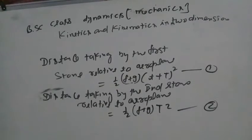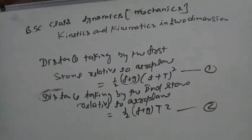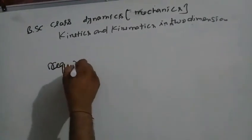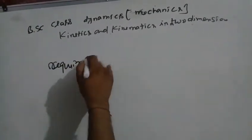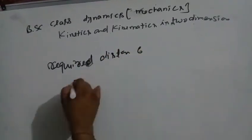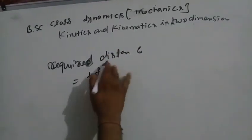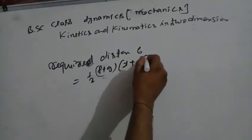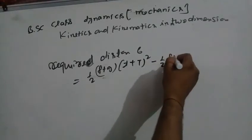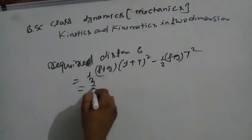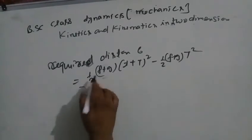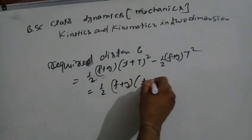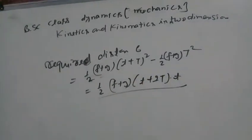Required distance = distance of first stone minus distance of second stone = ½(f + g)(t + T)² − ½(f + g)·T². Solving this: = ½(f + g)[t² + 2T·t] = ½(f + g)·t(t + 2T). This completes the solution.